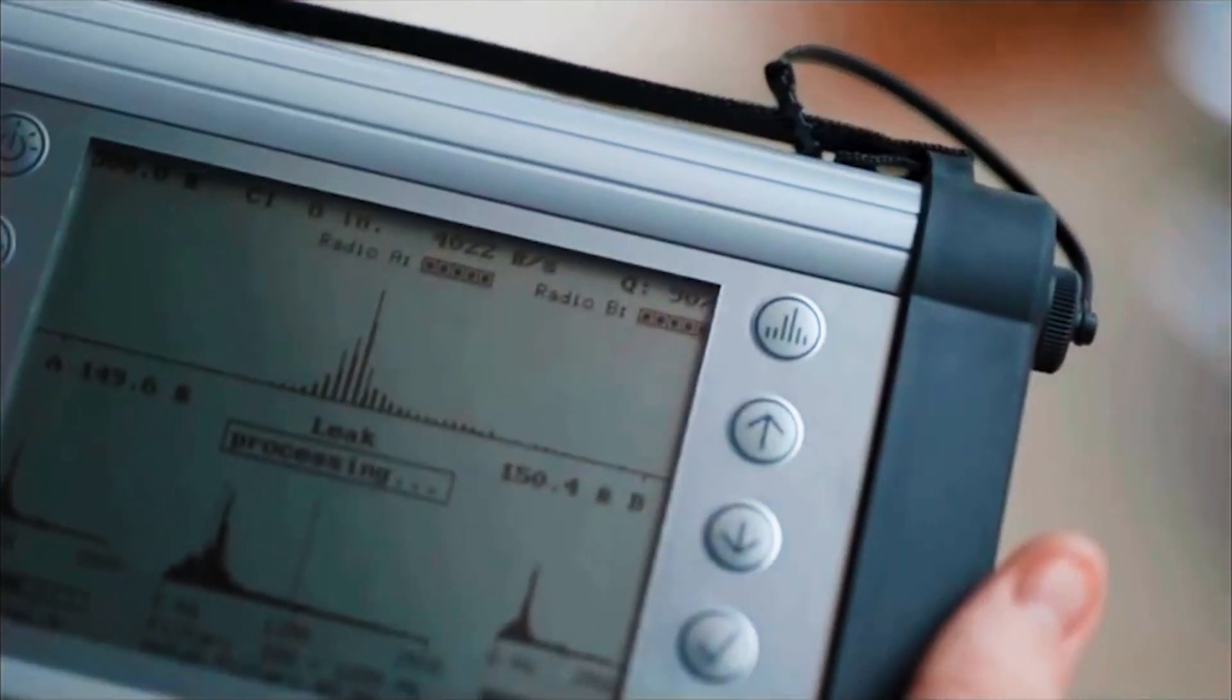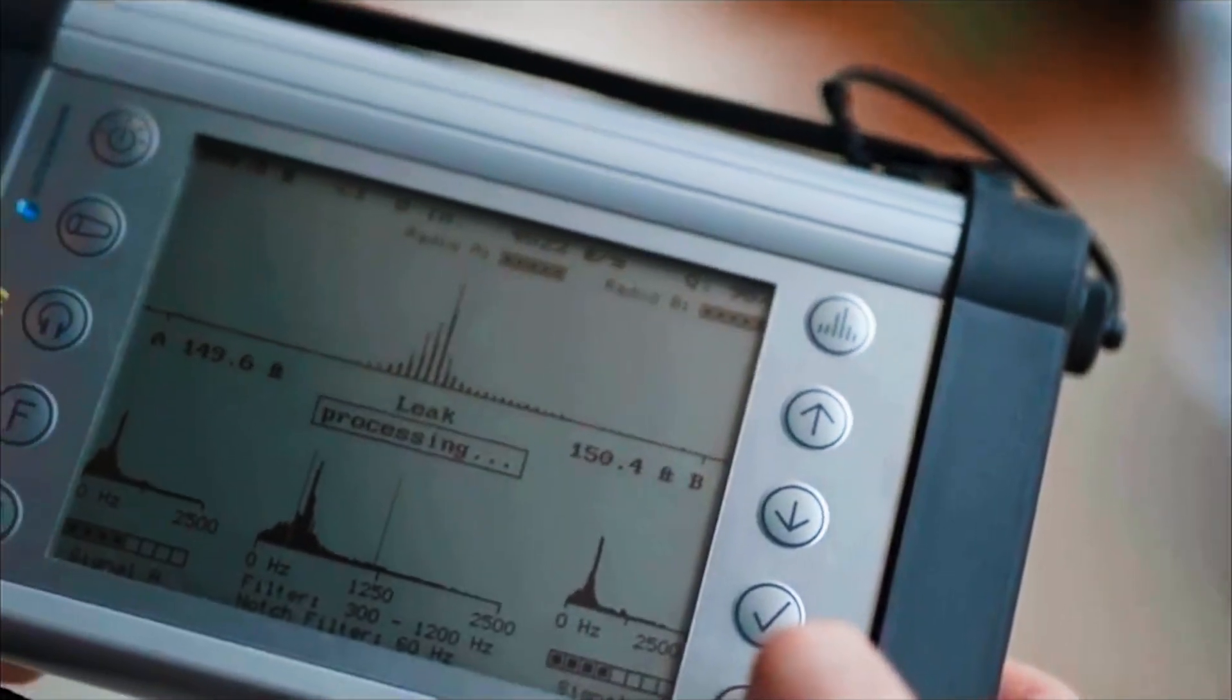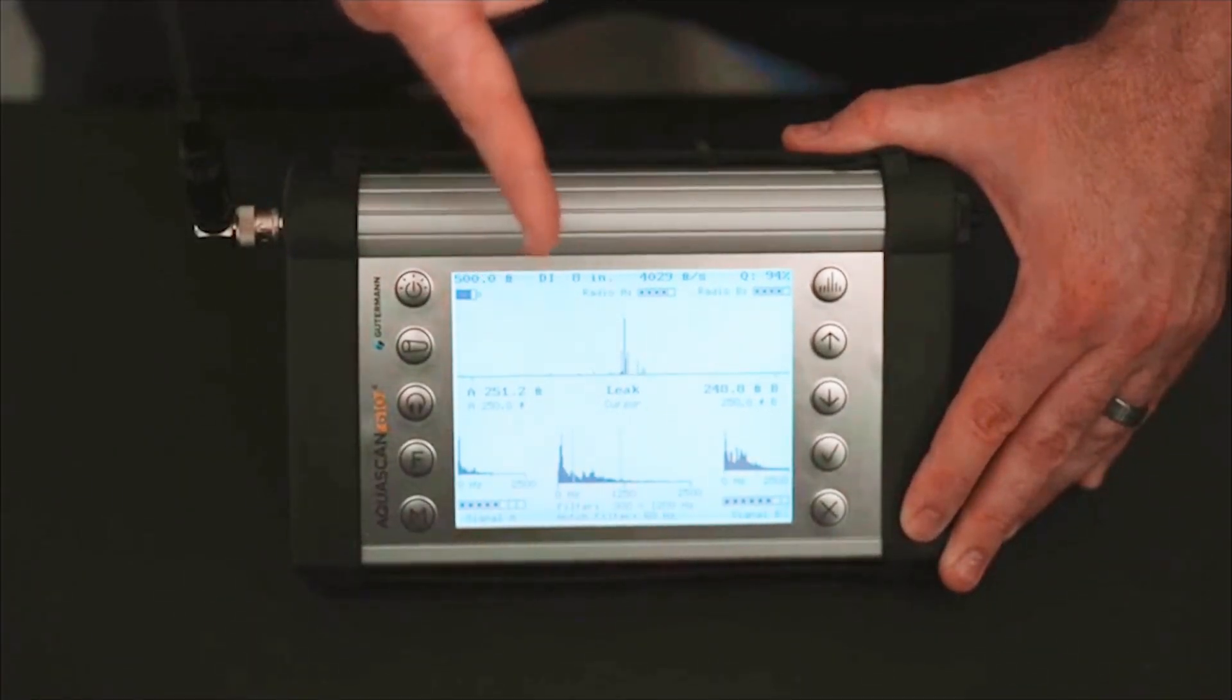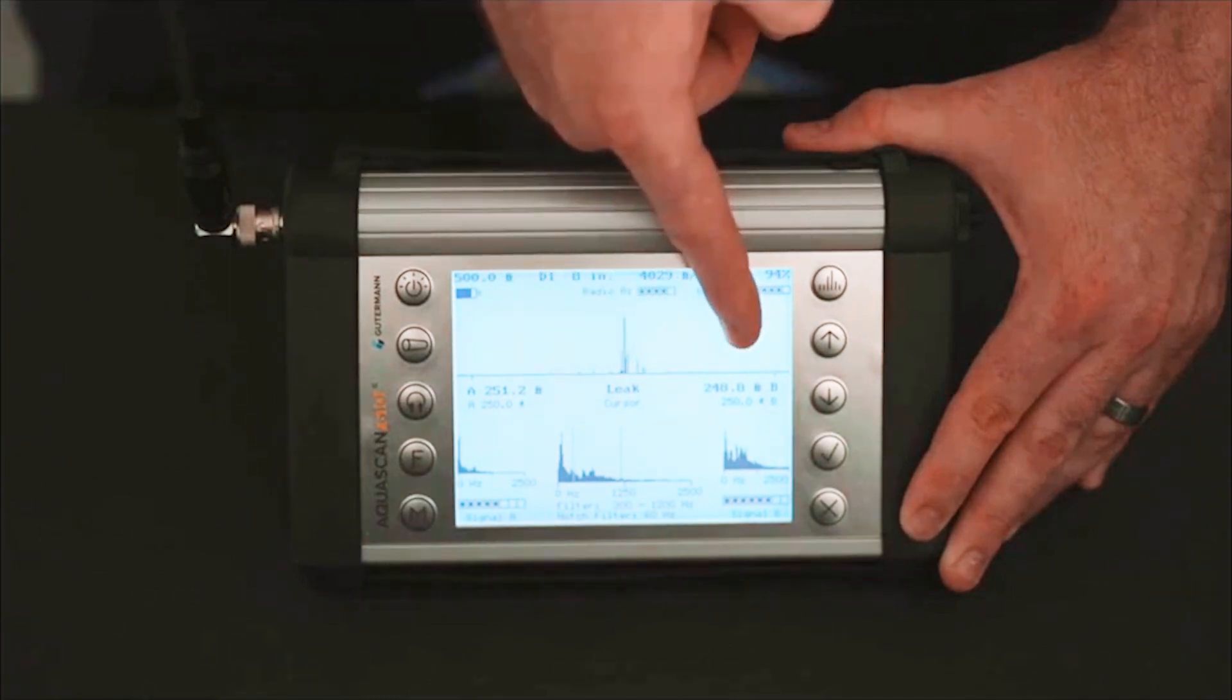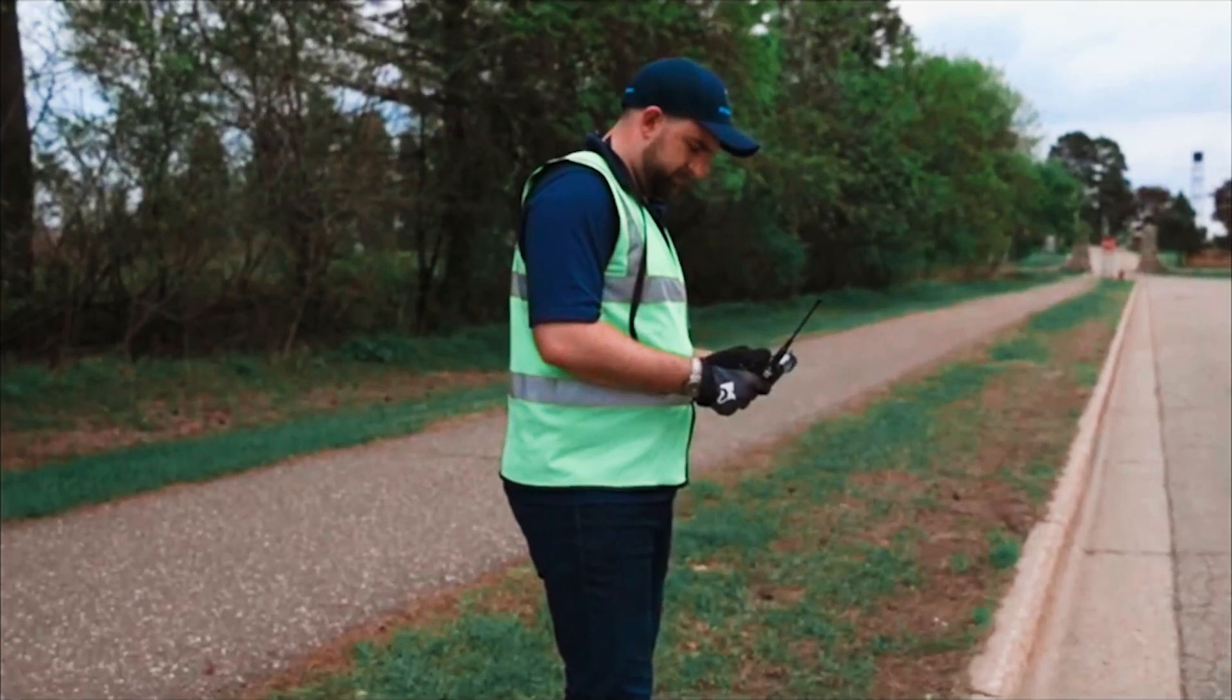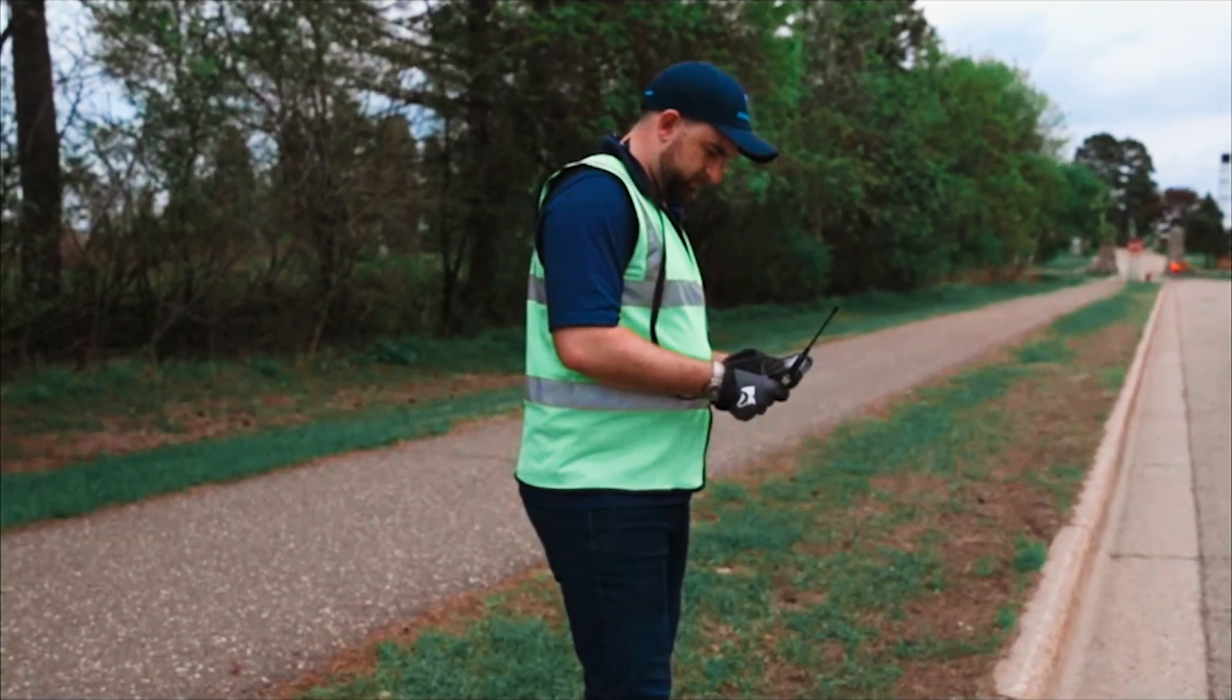The first is the quality percentage number found in the upper right corner of the screen. This is a percentage from 0 to 100. The higher the percentage number, the more confident the user can be in knowing that they have identified and pinpointed a leak. Although there is no set number that represents the presence of a leak or not, the operator must use judgment in order to make the final decision to mark the leak.